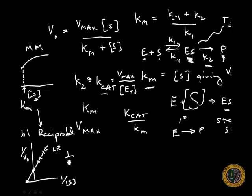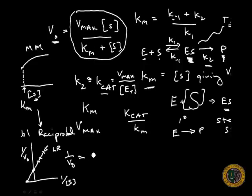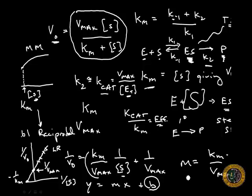The double reciprocal plot looks like this: 1 over V0. If we take the reciprocal of this equation, we're going to end up with Km over Vmax times 1 over S plus 1 over Vmax.